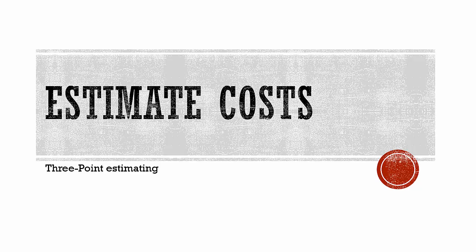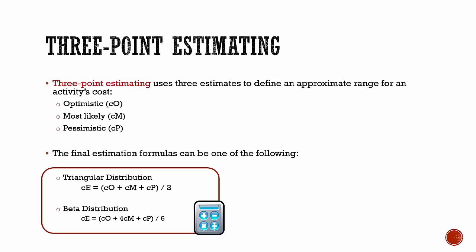Three-point estimating improves the accuracy of cost estimates by using three estimates to define an approximate range for an activity's costs. The three estimates are: most likely, which is the most realistic assessment; optimistic, which is the best case scenario; and pessimistic, which is the worst case scenario.